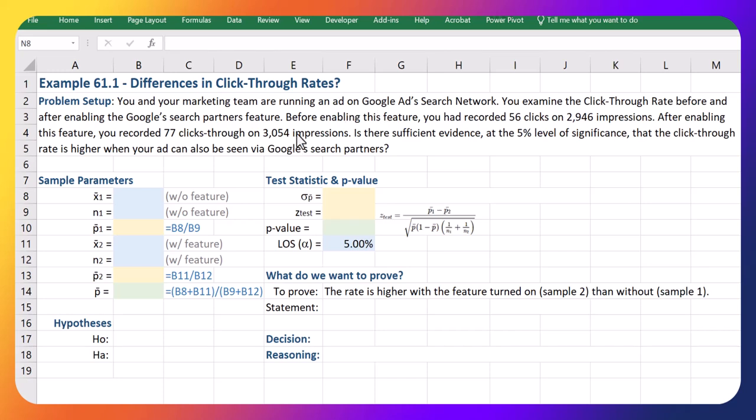After that disclaimer, the question is: is there sufficient evidence at the five percent level of significance that the click-through rate is higher when your ad can also be seen via Google's search partners? We're looking to test for a difference in proportions between these two samples. This is a hypothesis test with that difference in samples.